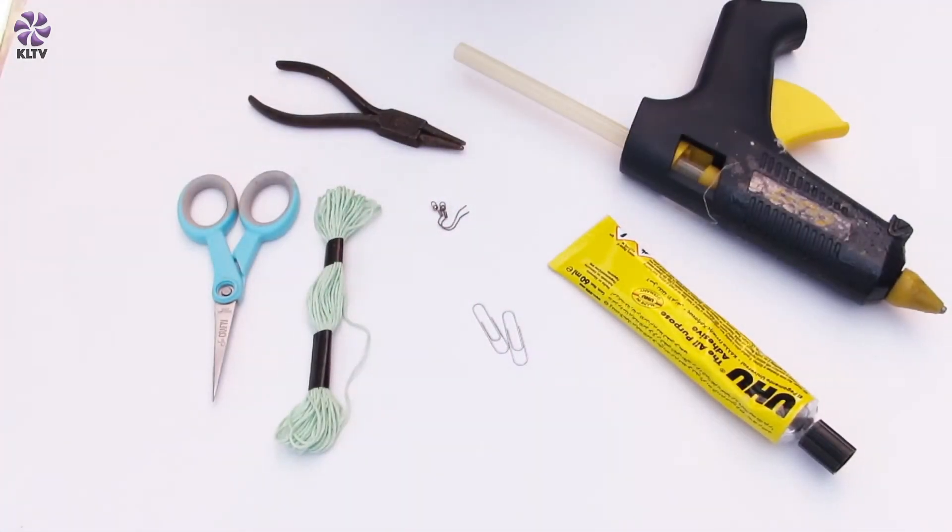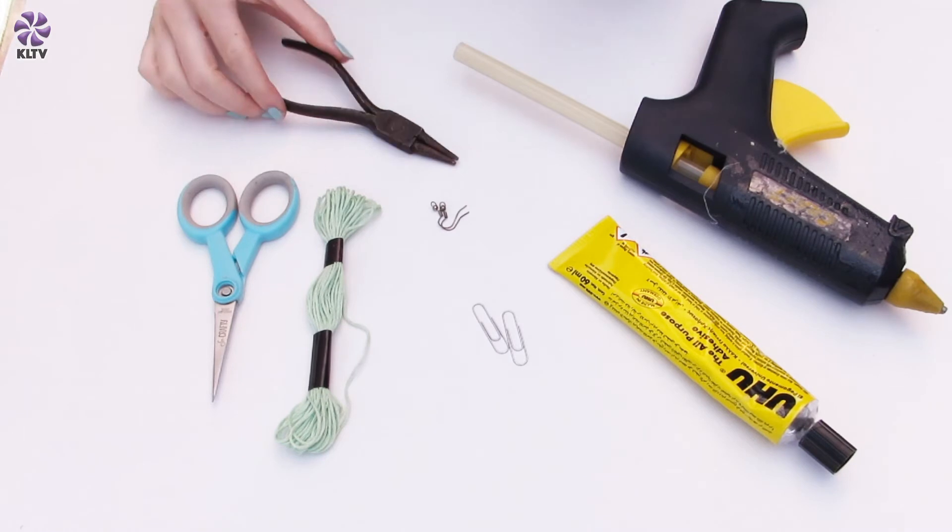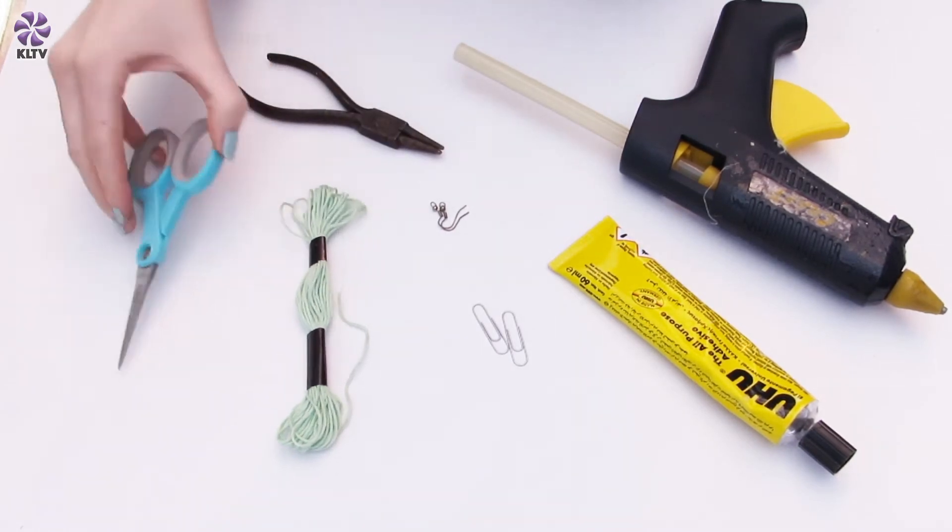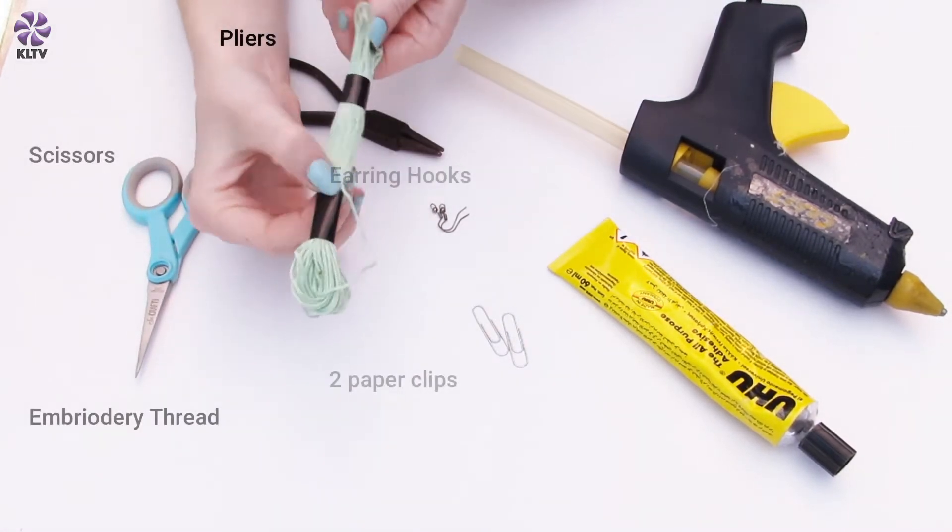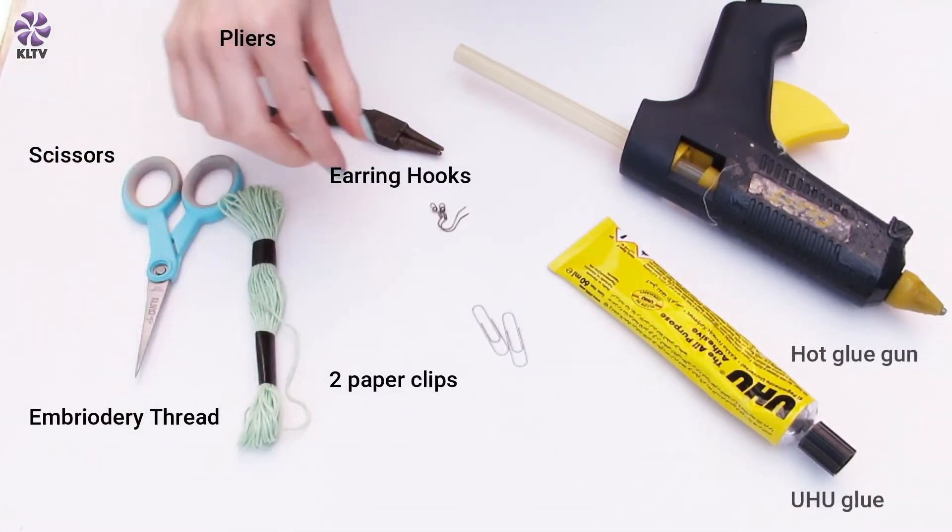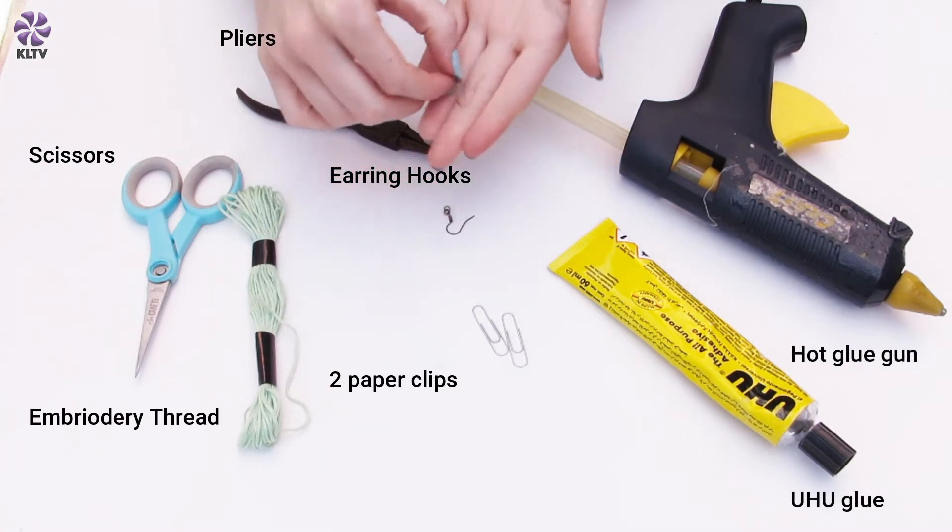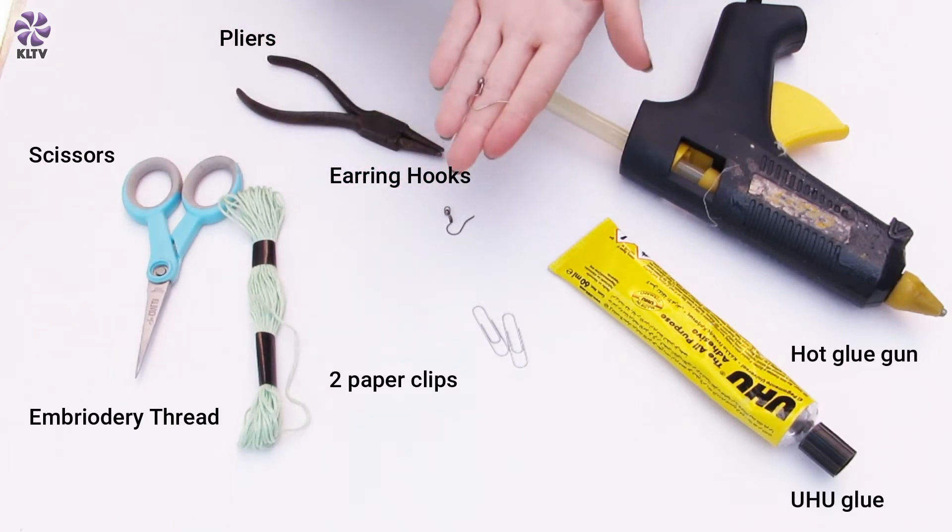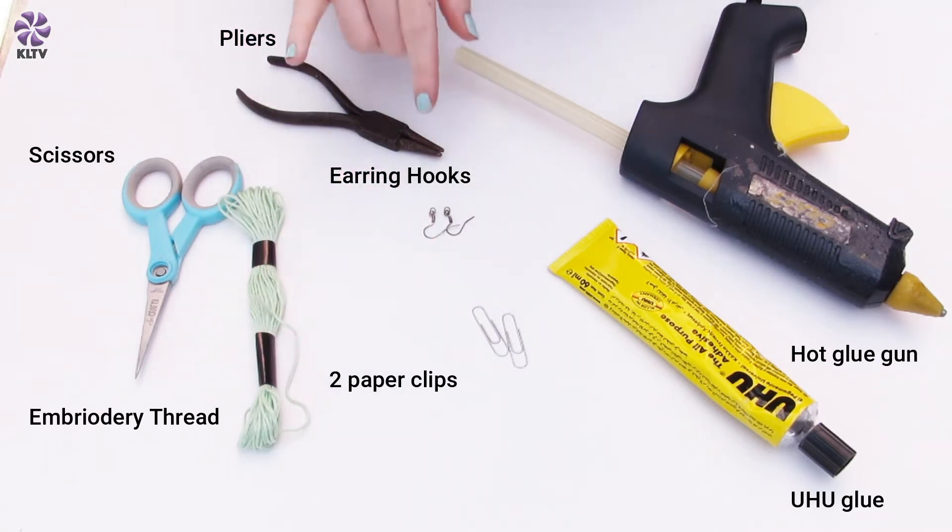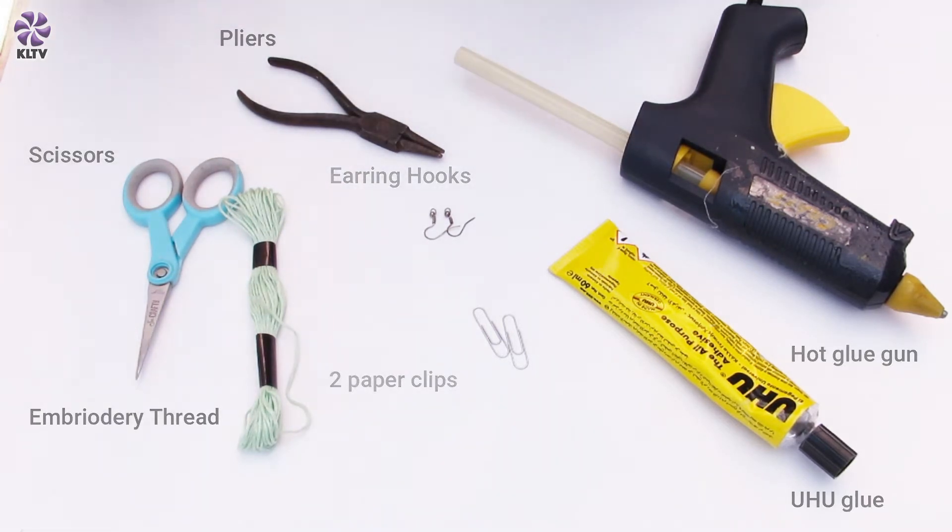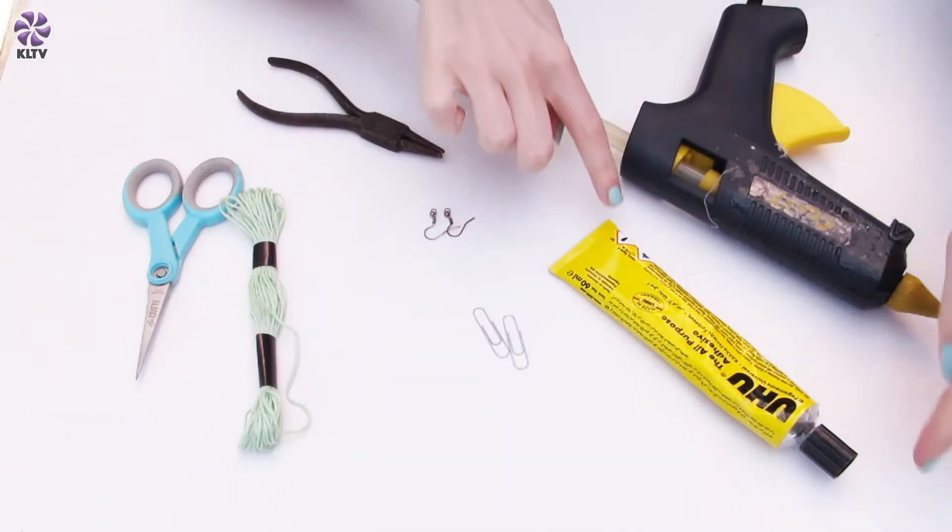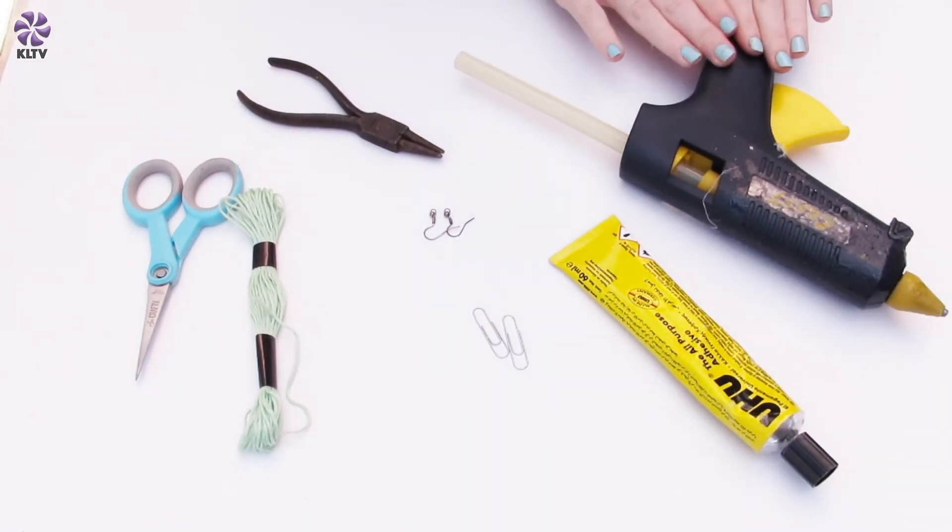Things you're going to need for this project: some pliers, scissors to cut your embroidery thread, embroidery thread in any color of your choice, some earring hooks. If you don't have these, they can easily be ordered online or you can make some yourself out of thin wire. Just please make sure that you file down the edges so they're not sharp when going into your ears. Two paper clips, some UHU glue, and a hot glue gun.